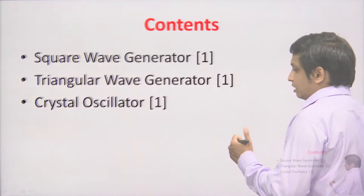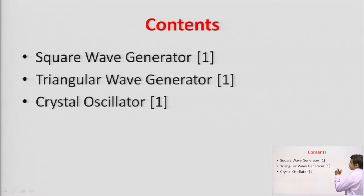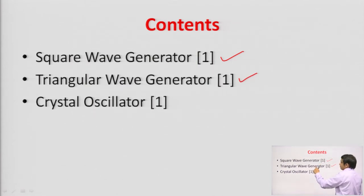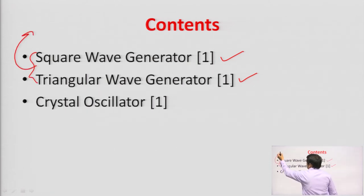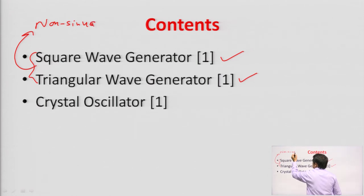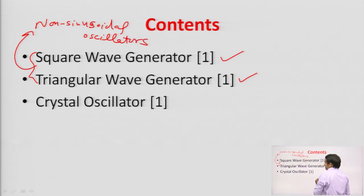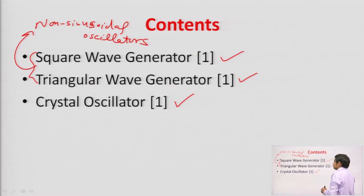In non-sinusoidal oscillators, I am going to discuss basically two types of generators. The first one is the square wave generator and the second one is the triangular wave generator. These two are non-sinusoidal oscillators, and after that we will discuss about crystal oscillators.